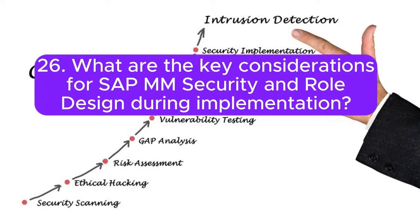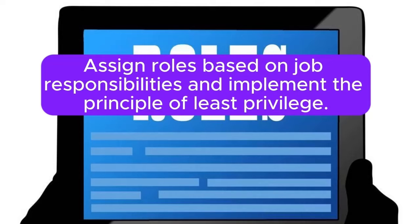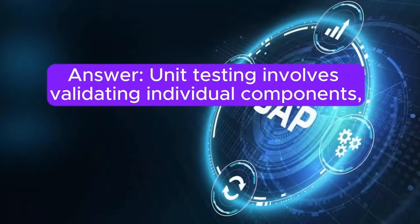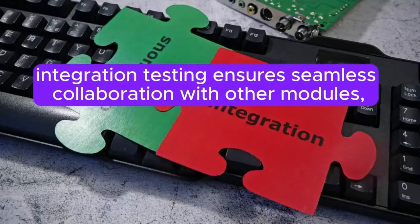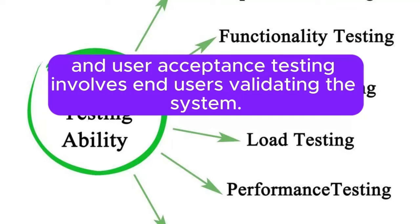Question 26: What are the key considerations for SAP MM security and role design during implementation? Answer: Design roles and authorizations using transaction codes like PFCG to ensure data security. Assign roles based on job responsibilities and implement the principle of least privilege. Question 27: How do you handle SAP MM testing — unit testing, integration testing, and user acceptance testing — in an implementation project? Answer: Unit testing involves validating individual components. Integration testing ensures seamless collaboration with other modules. User acceptance testing involves end users validating the system. Rigorous testing is critical for a successful implementation.